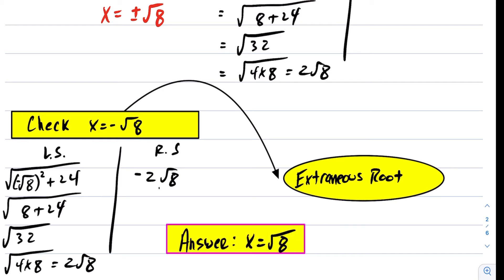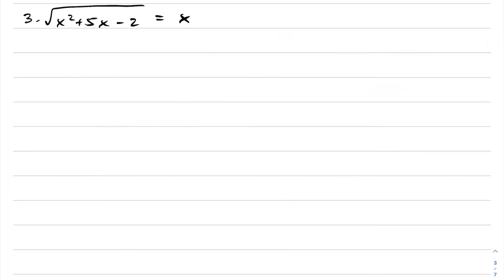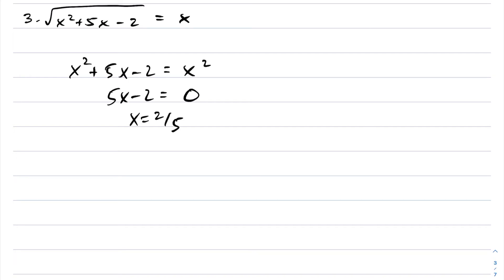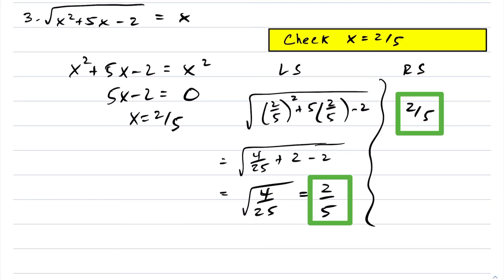Let's take a look at another question. For the next equation, the same strategy — we want to square both sides. Bringing everything to one side, we get 5x minus 2 equals 0, and solving for x we get x equals 2 fifths. Checking 2 fifths into our equation, the left-hand side equals the right-hand side, so this is the solution to this radical equation.